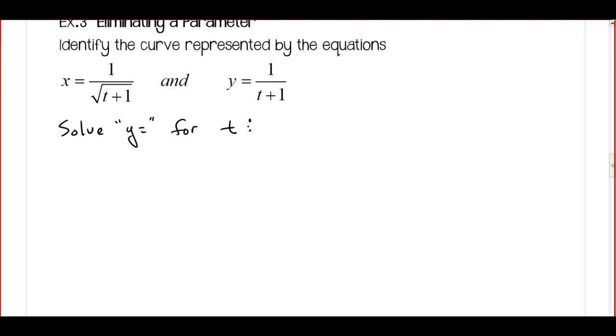I'm going to cross multiply. So I get Y times T plus 1 is equal to 1. And then I'm going to distribute. So I get Yt plus Y is equal to 1. And I've got Yt is equal to 1 minus Y. And that's going to give me that T is equal to 1 minus Y over Y. So that's step 1.